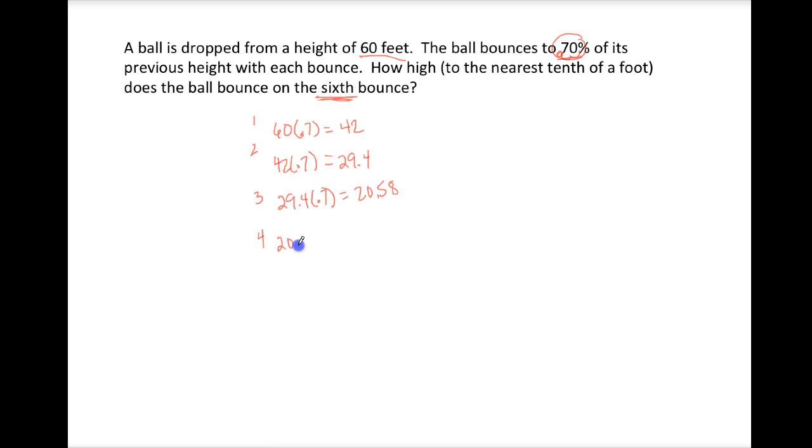On the fourth bounce, we take our 20.58 times .7, and we get 14.406. The fifth bounce, we have our 14.406 times .7, which gives us 10.0842.